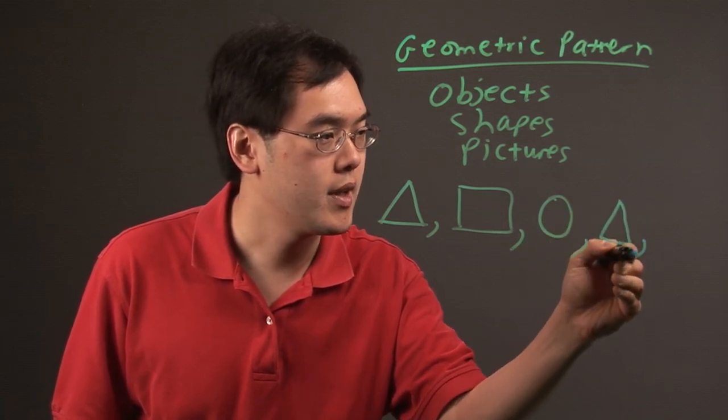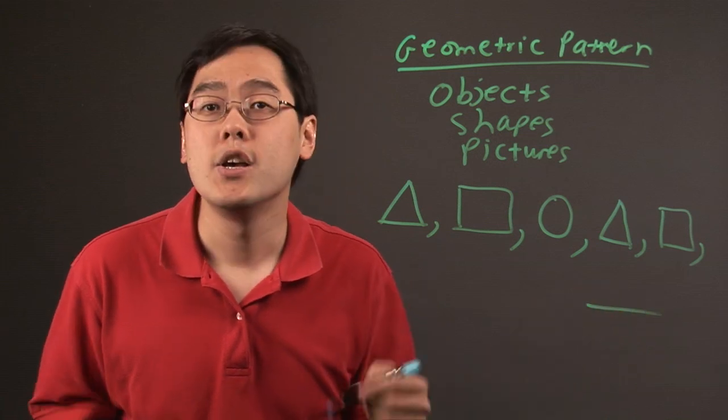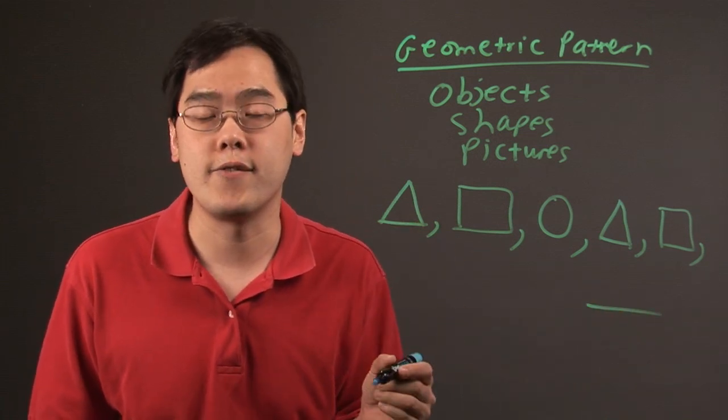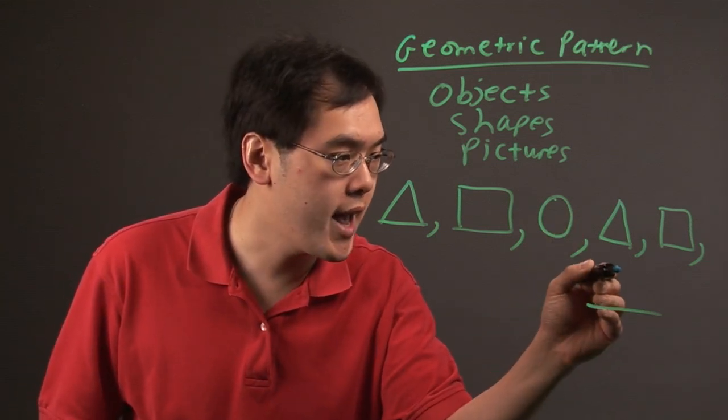And then you might be asked, okay, find the next shape. So the idea here is you want to look for a pattern if there is one and then try to figure out what the next few shapes are going to be. So in this case, given the pattern that I have, I know a circle is going to follow that.